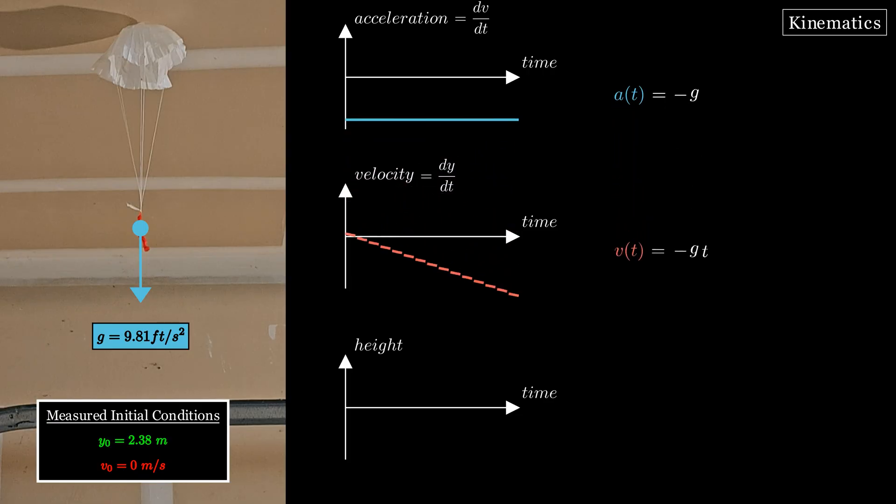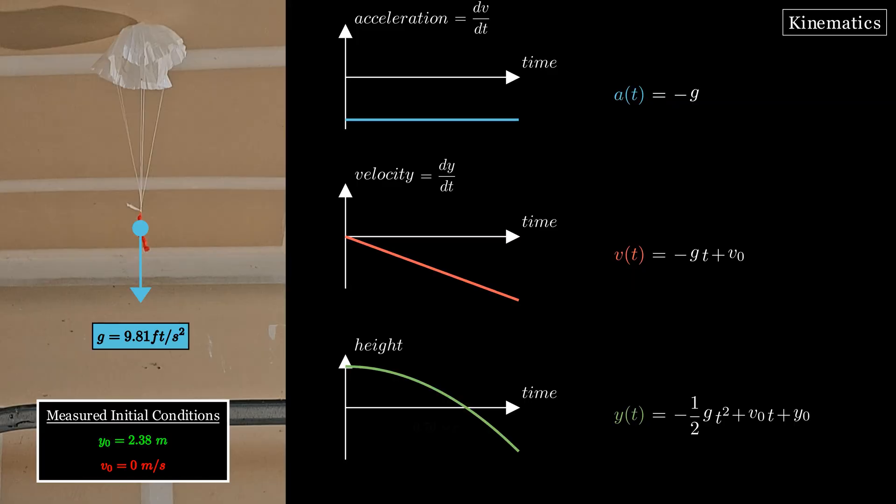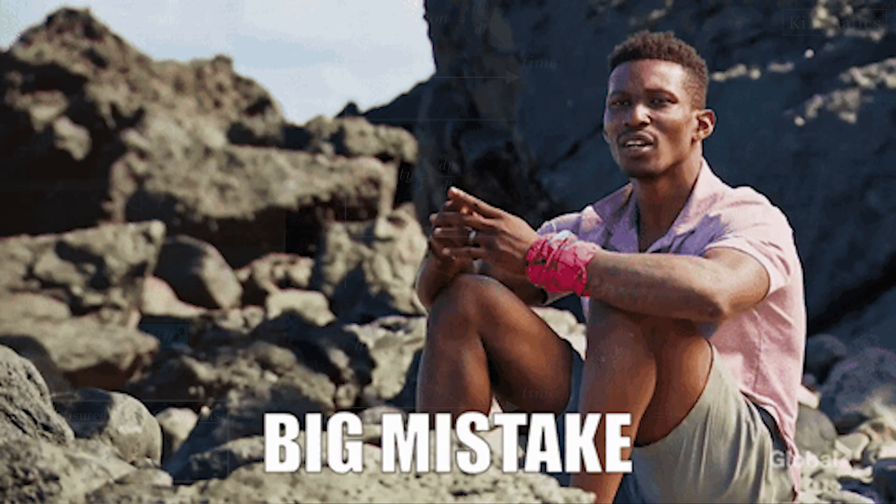If we assumed no drag and solved it using kinematics like last episode with the soap dispenser, you might expect it to take 0.7 seconds for him to reach the ground. However, since the whole point of a parachute is to create drag to slow down the fall, assuming constant acceleration would be a big mistake.